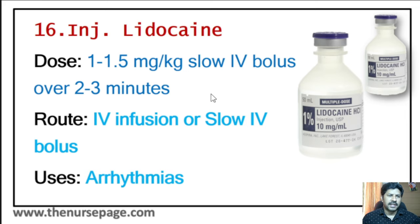Twenty-ninth medicine is ergometrine, trade name Methergin. Emergency use is control of postpartum hemorrhage and prevention or treatment of uterine atony after childbirth. Route of administration is IM injection. Dosage is 0.2 milligram IM, repeated as necessary up to a maximum of 0.8 milligram in 24 hours.